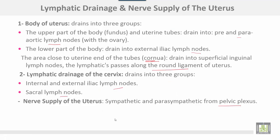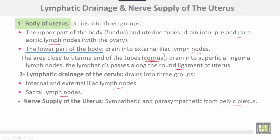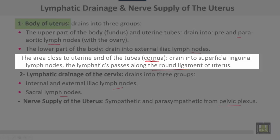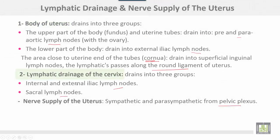Lymphatic drainage: the body of the uterus drains into three groups. The upper part of the body and the uterine tubes drain into pre- and para-aortic lymph nodes along with the ovarian lymphatics. The lower part of the body drains into the external iliac lymph nodes. The area close to the uterine end of the tube or corner of the uterus drains into the superficial inguinal lymph nodes, the lymphatics passing along the round ligament of the uterus. The lymphatic drainage of the cervix drains into three groups: internal and external iliac lymph nodes, in addition to sacral lymph nodes.